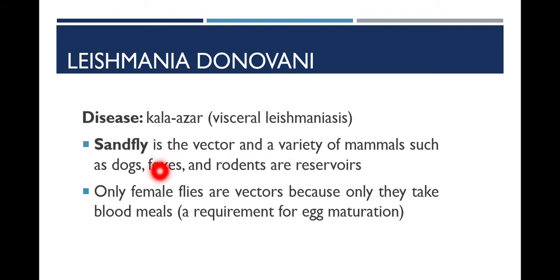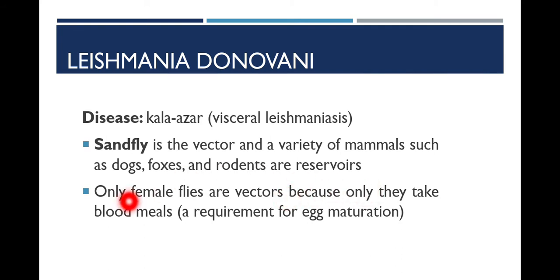A variety of mammals such as dogs, foxes, and rodents are the reservoirs of this pathogen. Only female sand flies can transmit Leishmania donovani from one host to another, or from reservoir to human being, because they require a protein present in human blood for the maturation of their eggs. Therefore only the female sand fly feeds on human beings.